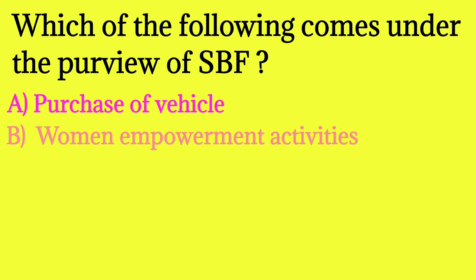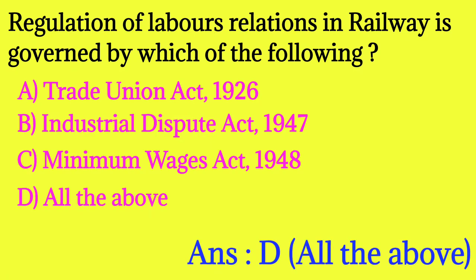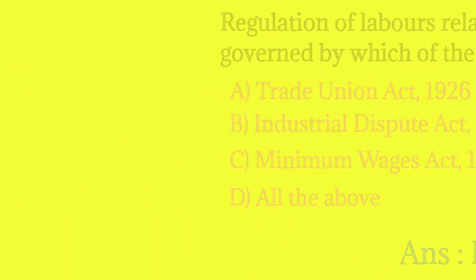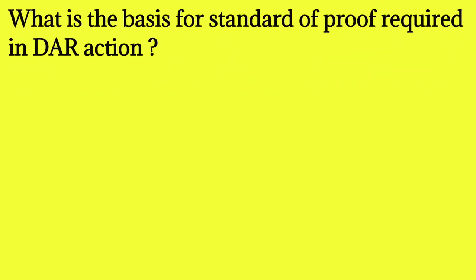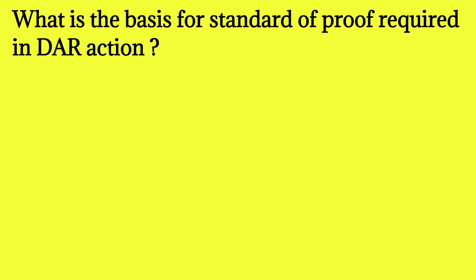Regulation of labor relations in railway is governed by which of the following? Option A: Trade Union Act 1926. Option B: Industrial Dispute Act 1947. Option C: Minimum Wages Act 1948. Option D: All of the above. The answer is D — all of the above. It is noted that wherever the 'all the above' option appears in this exam, the answer tends to be all of the above.